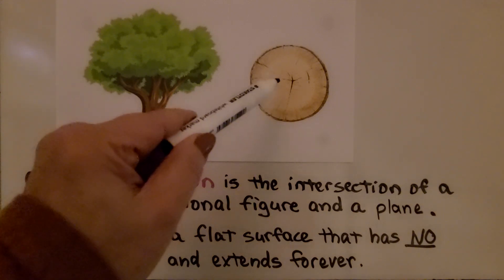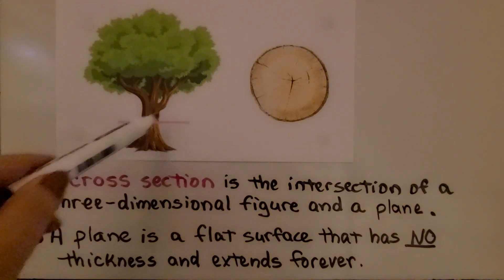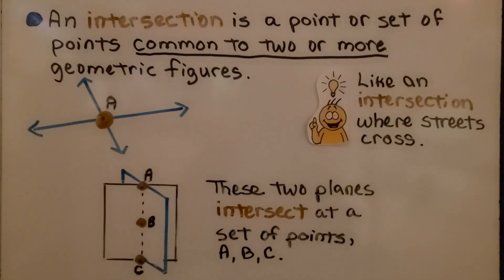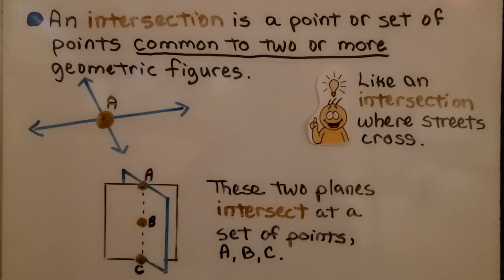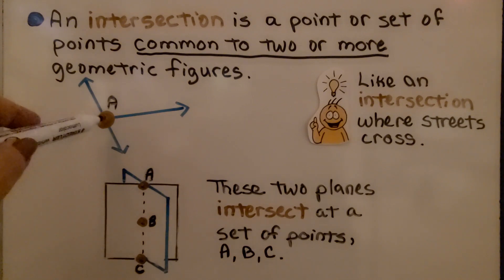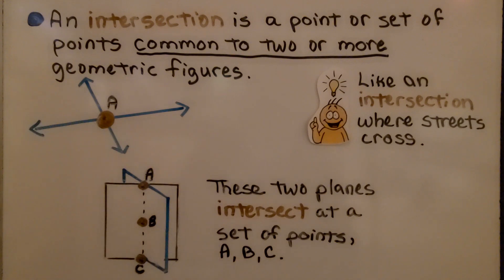So this would be the cross-section of an oak tree. An intersection is a point or set of points common to two or more geometric figures. Here we have a line and another line. The intersection is the point where they meet — that's what they have in common. It's like the intersection where streets cross.